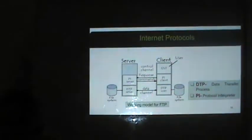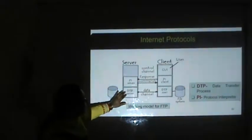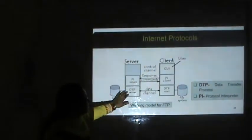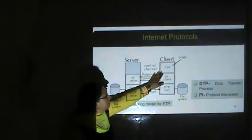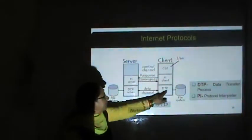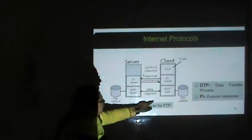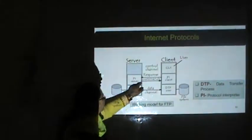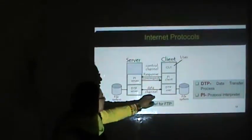The working model of FTP includes a PI server (Protocol Interpreter) and a DTP server (Data Transfer Process). On the client side there is a graphical user interface, a PI client and a DTP user. Responses go from the PI client to the PI server and commands come back. The DTP user accesses the DTP server through the data channel.